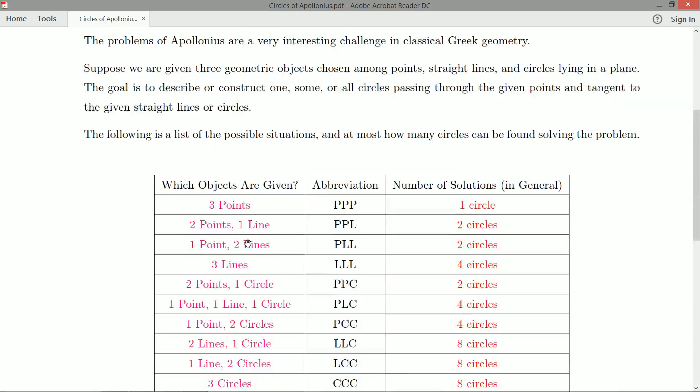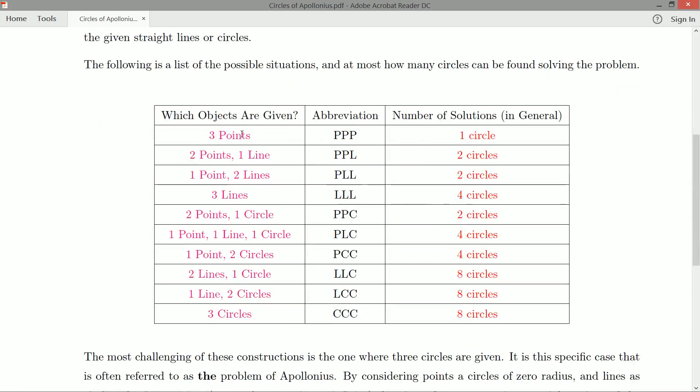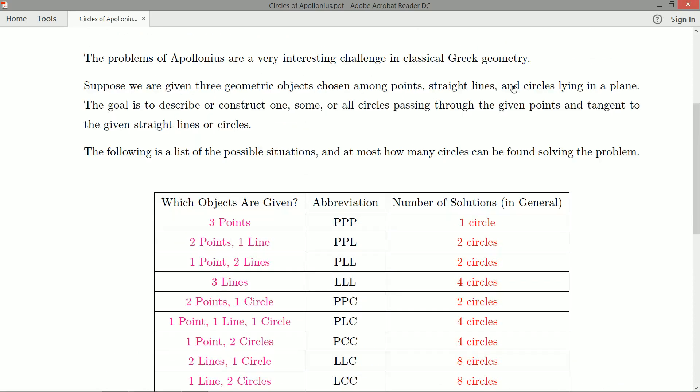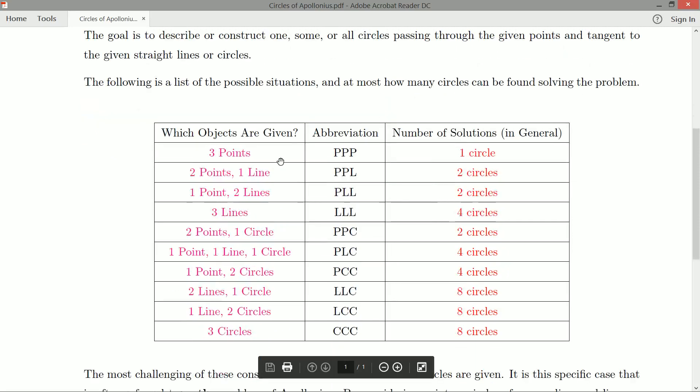So I've summarized the results in this little chart here, and also summarized the different possible cases. With points, lines, and circles as our objects, and three of them are what we need, there's 10 different cases we can work with. So you can have three points sitting in a plane, and assuming that they're in a nice general configuration, there are some weird exceptional cases, like if all three points lie in a line, you're not going to be able to get a circle that passes through them.